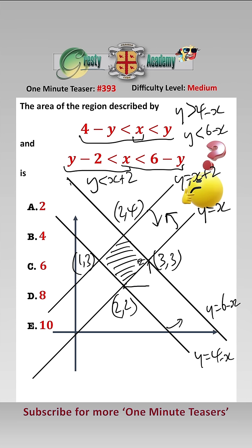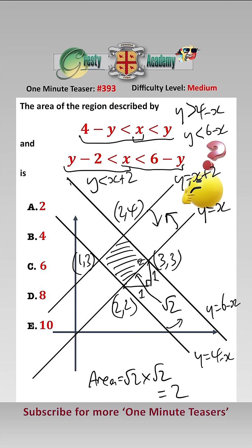The area of the square is easily found — we can do a Pythagoras triangle here where this side is 1 and this side is 1, so the side of the square is root 2. Therefore the area of the square equals root 2 times root 2, which equals 2 — answer A.